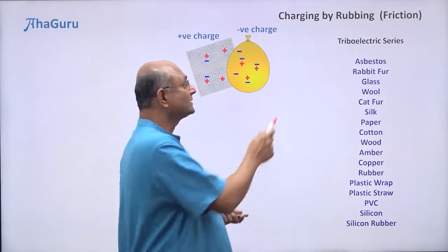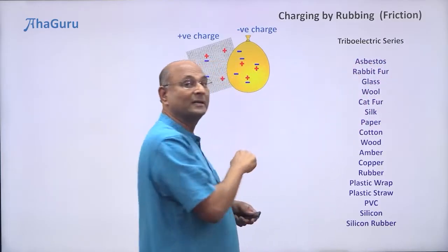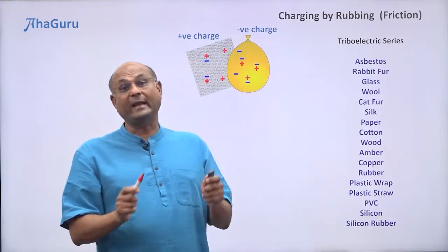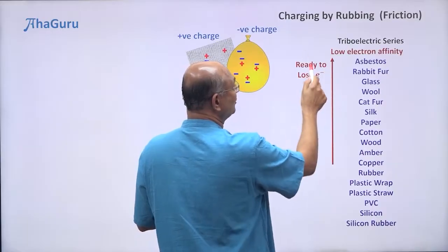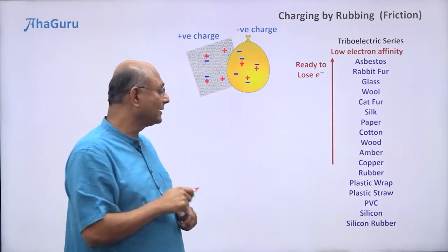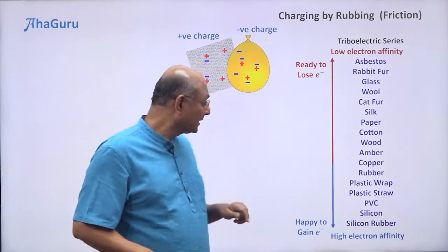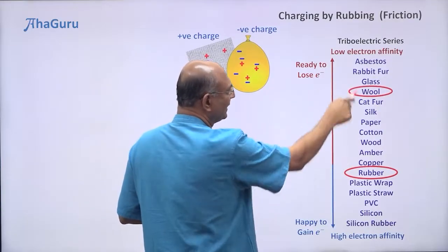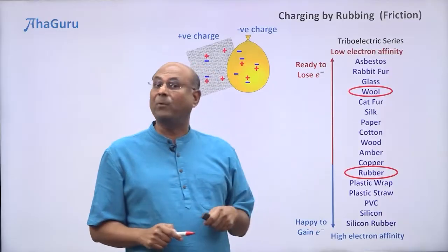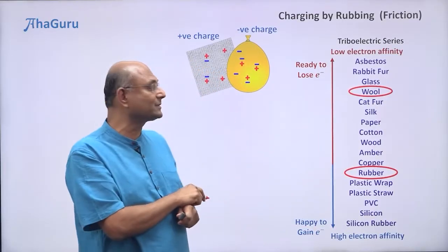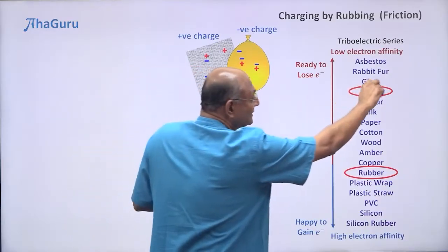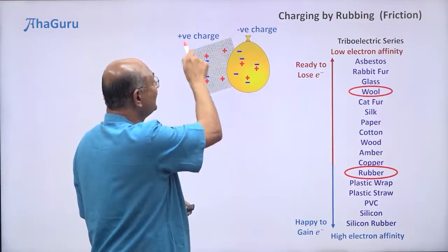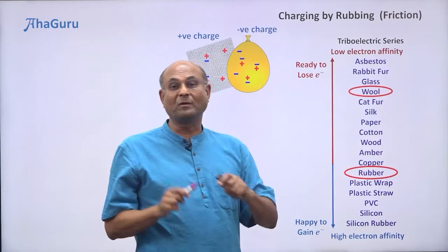Tribo basically means friction, so this is the frictional electricity series. The items at the top don't like electrons much — they are ready to give away their electrons, meaning they have low electron affinity. The ones at the bottom have high electron affinity and want to gain more electrons. Looking at wool and rubber: wool is at the top and rubber is at the bottom. So rubber wants to gain electrons and wool is ready to give them away. Wool gives away electrons to the rubber — that's why the rubber balloon becomes negatively charged and the wool becomes positively charged. Whatever is above in the series becomes positively charged; whatever is below becomes negatively charged.